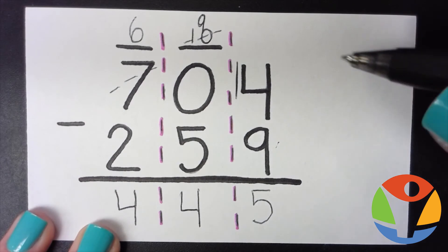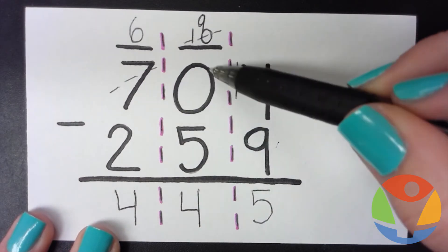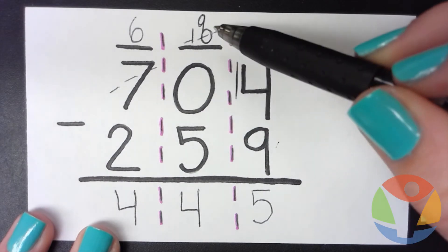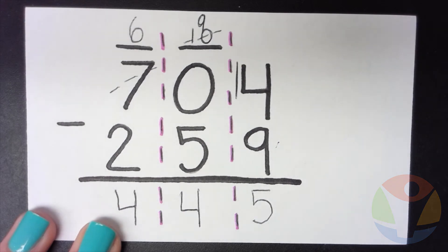The important thing on this problem is to make sure you borrow to make this zero a ten before you can do anything over here. Good job!